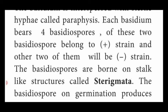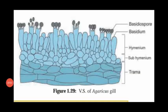Now let us see how basidiospores are produced. This is the vertical section of an Agaricus gill.